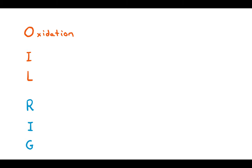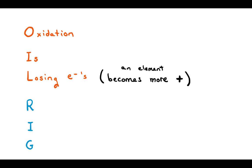OIL stands for oxidation is when you lose electrons in a reaction. So as you go from the left of an arrow to the right of an arrow, an element loses electrons and becomes more positive.